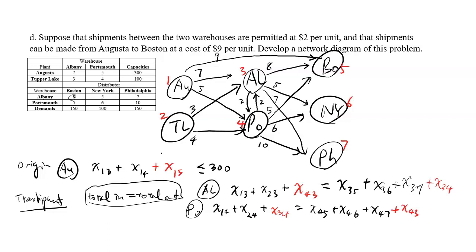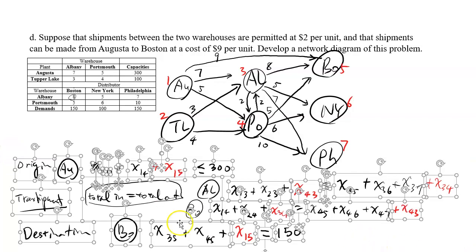In the destination nodes, New York and Philadelphia have nothing changed except Boston. Boston has something changed - there's a new route from Augusta. For the Boston destination, everything coming in is x_3,5, x_4,5. And in addition to this, there's something coming directly from Augusta which is x_1,5. For destination nodes, total things coming in should equal to its demand. Boston has the demand of 150, so this is what's changed. This should be the changed things in our linear programming problem.